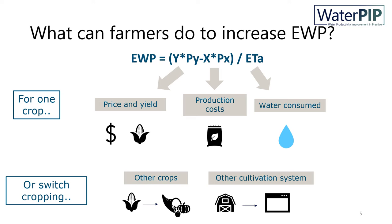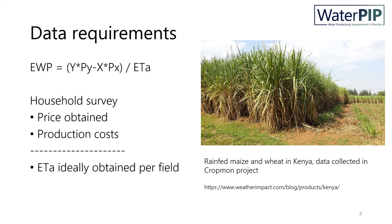Having explained the concept and farmer options, we now turn to data requirements for calculating economic water productivity. You will need information typically gathered through a household survey on the price obtained and the yield of a farmer, which is generally easy to retrieve — farmers know their harvest and selling prices well. You also need information on production costs: seed, feed, labor, machinery, and crop inputs, for which field visits are recommended to link fixed and variable costs to the production of one crop. Evapotranspiration is ideally obtained per field through modeling or measuring; modeling is most common and quickest, but values should be compared against what is known to be occurring in the field.